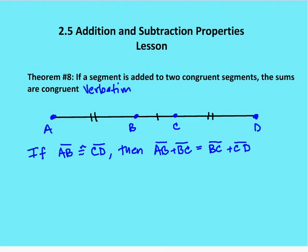All right, first theorem. If a segment is added to two congruent segments, then the sums are congruent. So if I have a segment BC and I add it to two congruent segments AB and CD — notice how I use the tick marks to indicate congruence. If I have two tick marks here and two tick marks here, then I know that AB and CD are congruent. So if BC is added to AB and BC is added to CD, then I know that AC is congruent to BD.